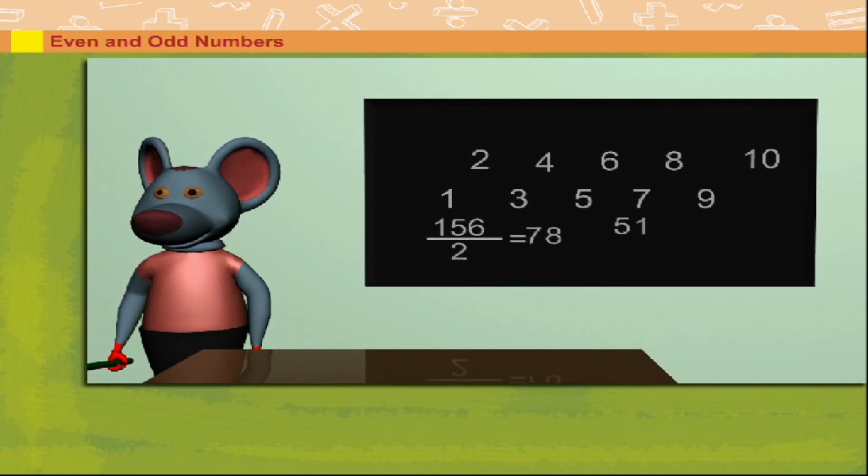He divides 570 by 2 and gets 285 with one remainder. So, numbers divisible by 2 completely are even and not divisible by 2 completely are odd.